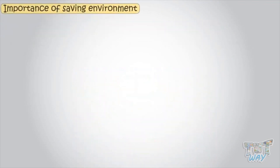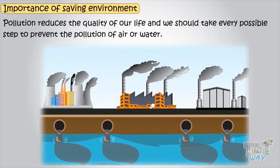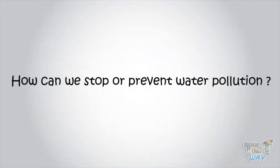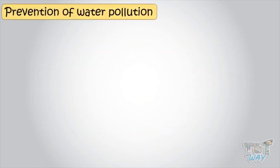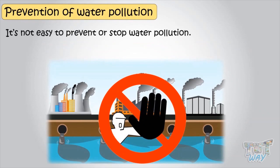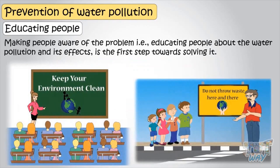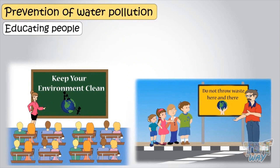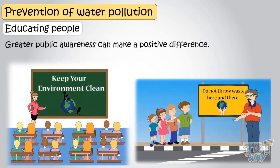So kids, polluting the environment reduces the quality of our life and we should take every step to prevent the pollution of air or water. Now let's see how we can stop or prevent water pollution. It's not easy — we need to take several steps in different spheres. Making people aware of the problem, that is educating people about water pollution and its effects, is the first step towards solving it, as greater public awareness can make a positive difference.